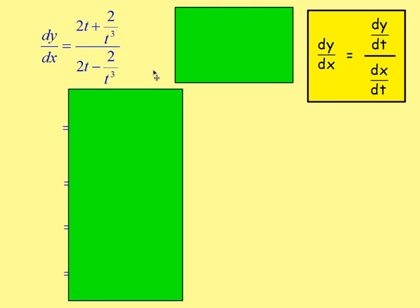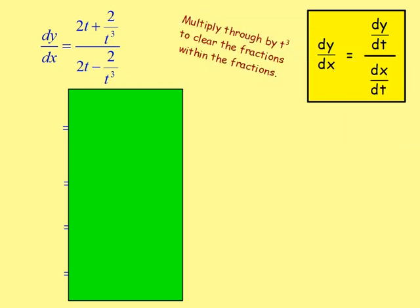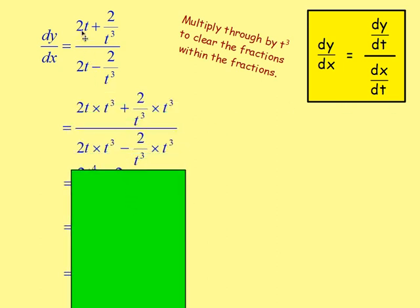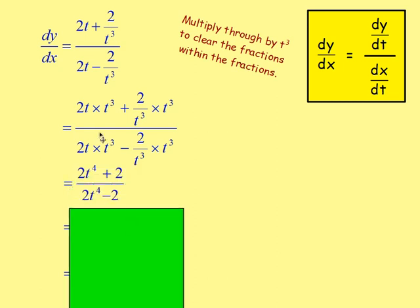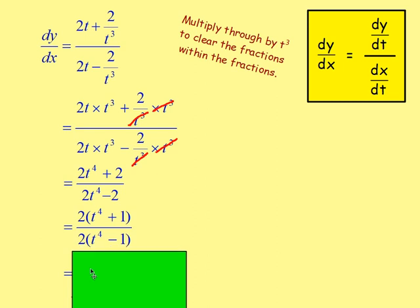What you could do is multiply each of the terms by t cubed to clear the fractions within the fractions. Multiplying through: 2t times t cubed gives 2t to the power of 4; 2 over t cubed times t cubed cancels to give 2; 2t times t cubed gives 2t to the power of 4; and minus 2 over t cubed times t cubed cancels to give minus 2. Taking out the common factor of 2 from top and bottom, you're left with t to the power of 4 plus 1 over t to the power of 4 minus 1. And that is your answer.